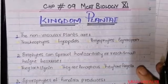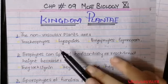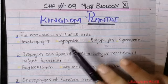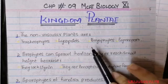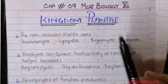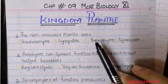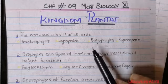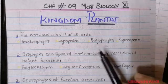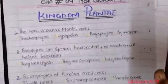Starting from question number 1 of chapter number 9 of MCAT biology. Question 1: The non-vascular plants are — A. Tracheophytes, B. Lycoopsida, C. Bryophyte, D. Gymnosperm. Which of the following is a non-vascular plant, meaning it does not have a vascular supply? The major class considered as a non-vascular plant is Bryophyte. Option C for question number 1 is correct.